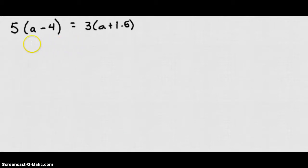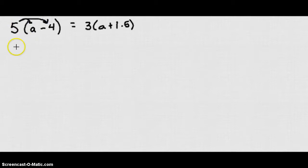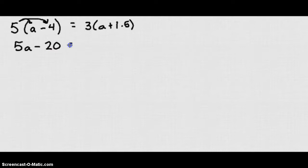Now let's look at an example that involves decimals and grouping symbols on both sides. Let's always start by distributing everything we've got. We get 5a minus 5 times 4 which is 20, equals 3a plus 3 times 1.5 which is 4.5.